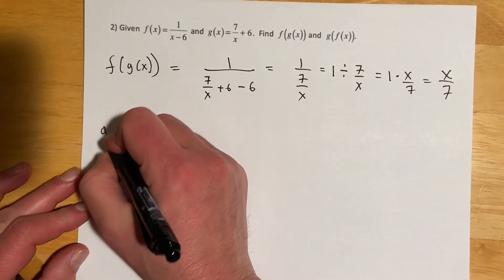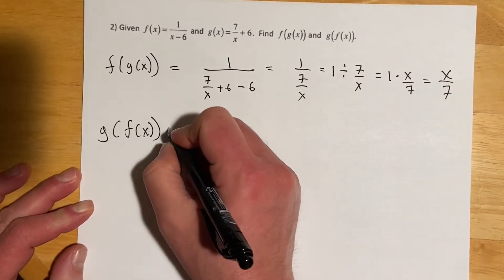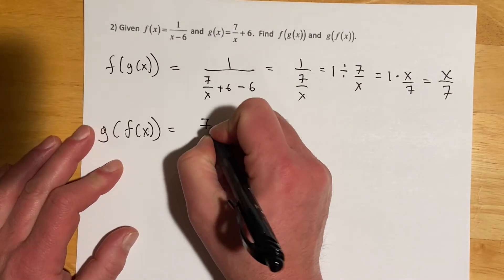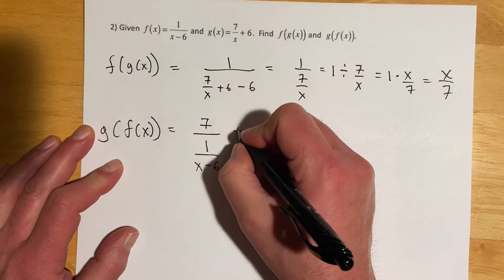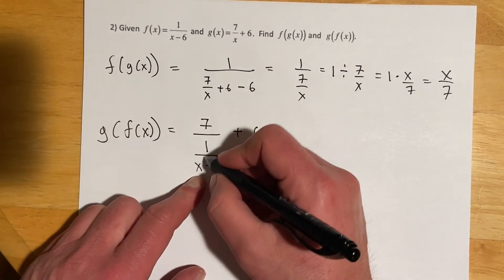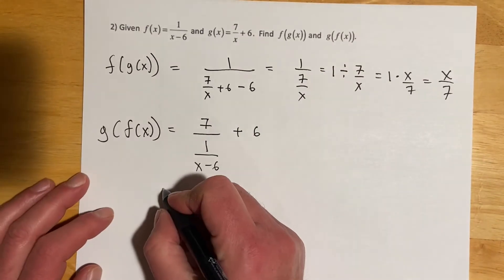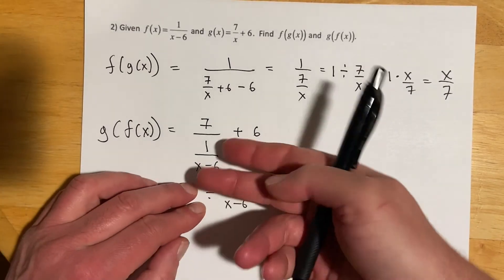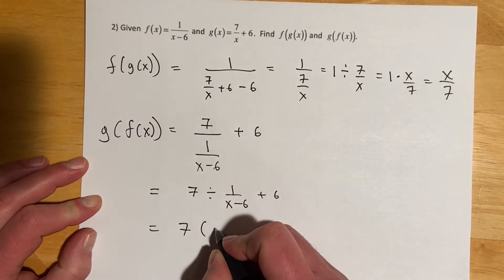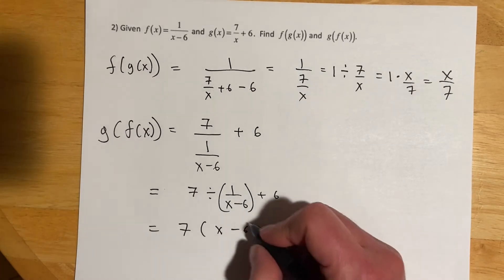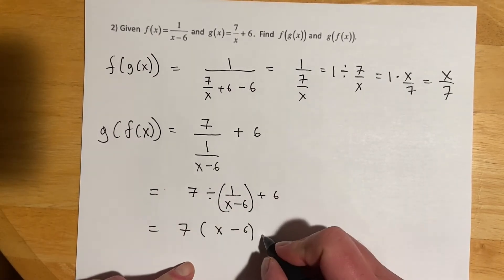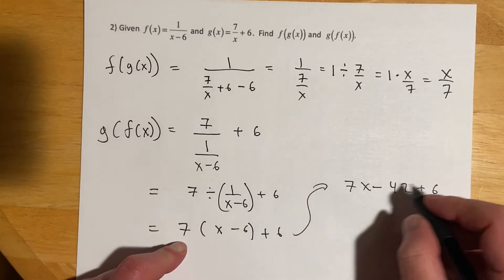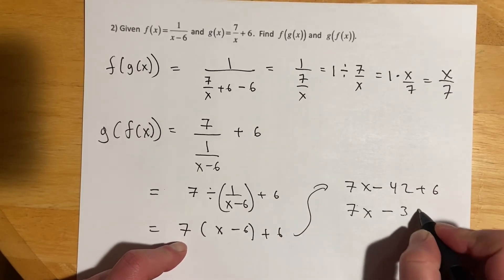For g of f of x, f of x goes in for x in g, giving us 7 over 1 over x minus 6, plus 6. That's 7 divided by a fraction, so rewriting it as 7 divided by 1 over x minus 6 lets us take the reciprocal: 7 times x minus 6. Keeping that in parentheses helps ensure the 7 distributes, giving 7x minus 42 plus 6, which is 7x minus 36.